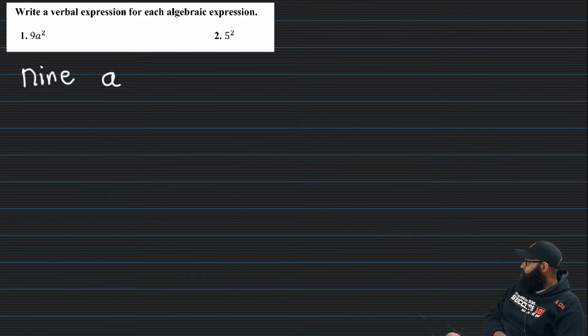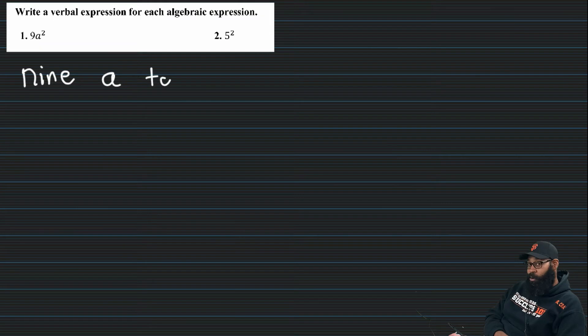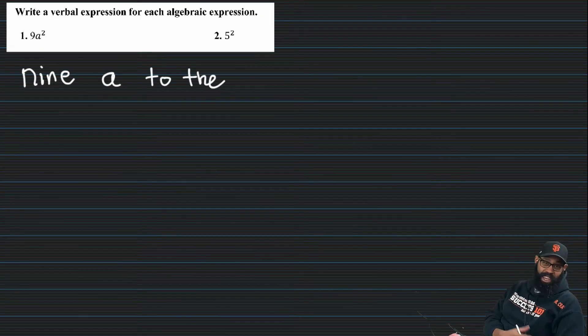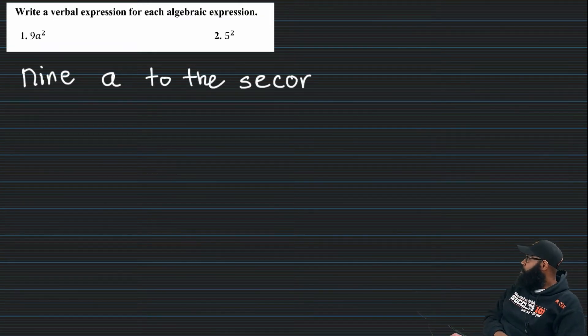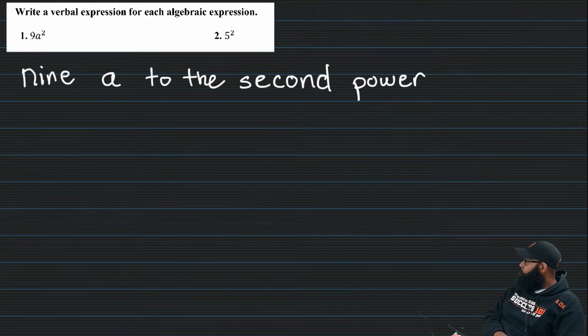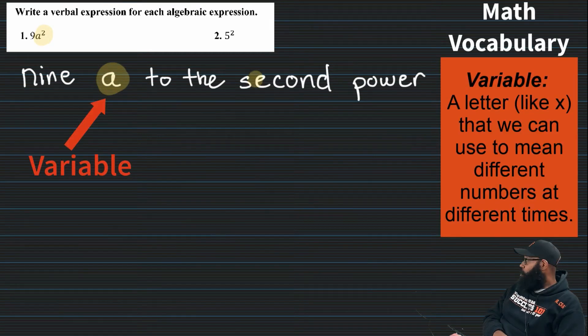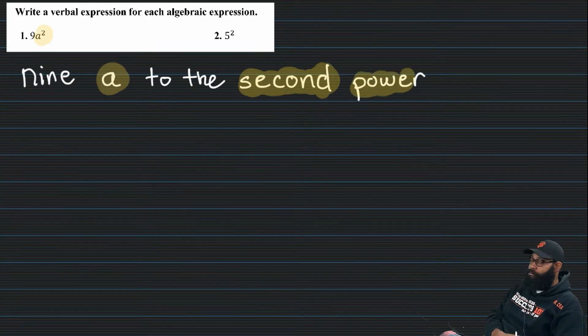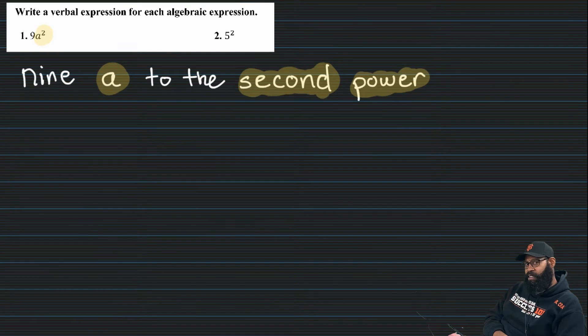So, 9a squared. I'm going to write nine a to the second power. Indicating our variable as a power. A is a variable. I'm going to go ahead and make sure I highlight. And of course, second power. Like I said guys, it's going to be pretty easy today. First lesson of the chapter.